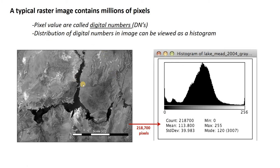Each of those pixels has a digital number, and we can view those digital numbers as a histogram. A lot of the pixels might be black with a value of 0, and white pixels might have a value of 256. We can see how those pixel values or digital numbers are spread and distributed using this histogram.